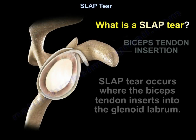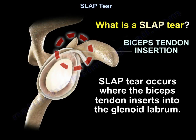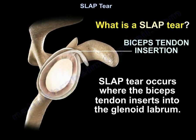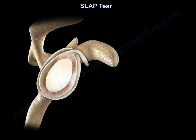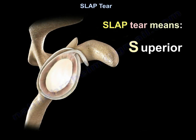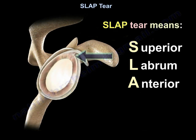What is a SLAP tear? A SLAP tear occurs where the biceps tendon inserts into the glenoid labrum. The word SLAP means tear of the Superior Labrum from Anterior to Posterior.